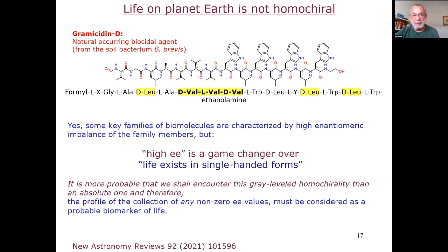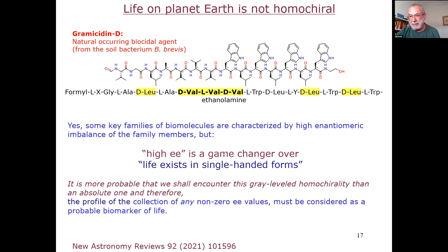First, an opening statement: life on planet Earth is not homochiral. This is well known to many, but also a paradigm to many others. For example, gramicidin contains D-valine, L-valine, D-leucine, and so on. I recently published an extensive review in New Astronomy Reviews covering the question of existence or non-existence of homochirality on planet Earth. Why is this important? Because high enantiomeric excess is a game changer over life existing in a single-handed form, which is the current paradigm — and if this is true, then any enantiomeric excess should be considered as a potential indicator of life.